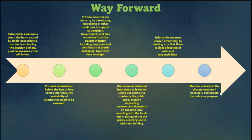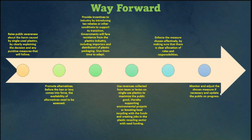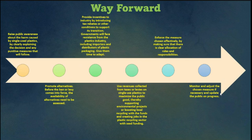Enforcement measures should clearly allocate roles and responsibilities — gram panchayats for rural areas, urban local bodies for urban areas. The chosen measures should be monitored and adjusted if necessary, and the public should be kept updated on progress. In areas with high plastic generation and energy deficiency, waste-to-energy plants can both manage plastic waste and generate energy, provided air quality in the area is not degraded. This concludes the discussion on plastic waste management.